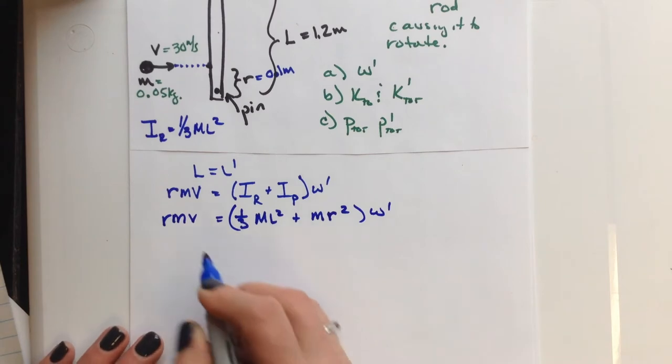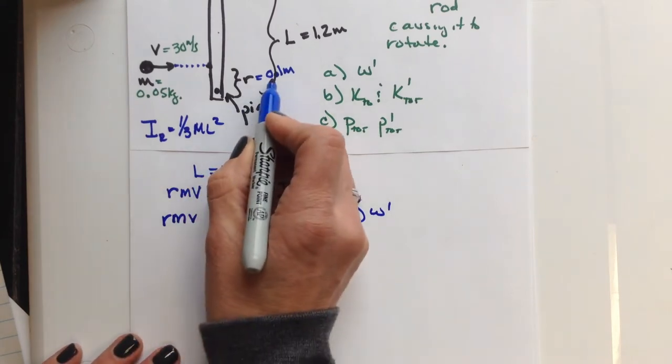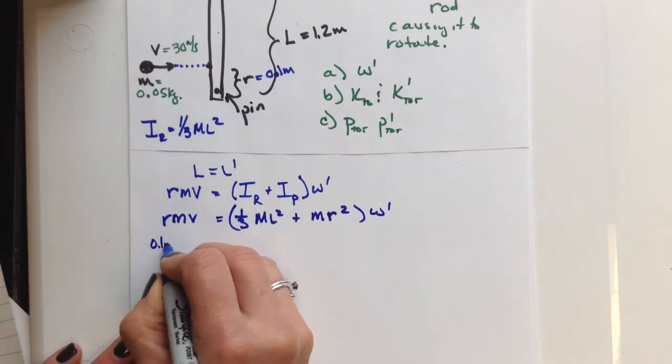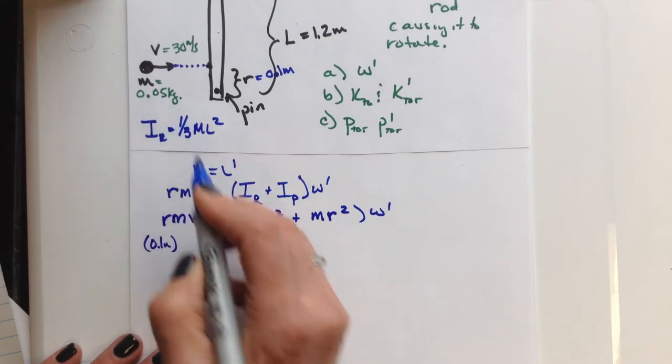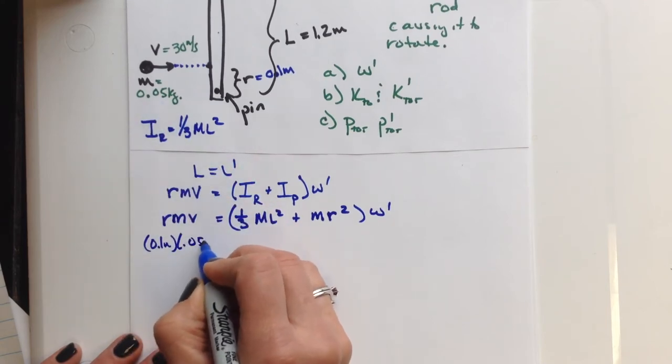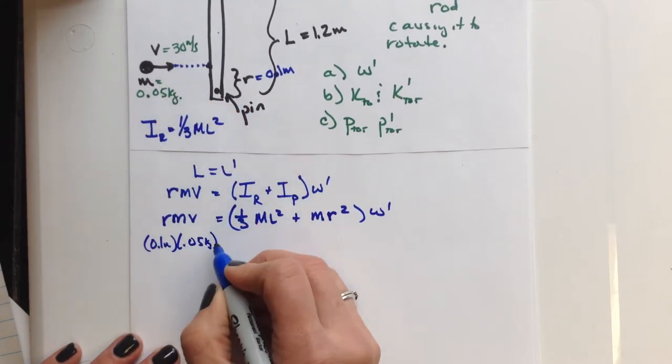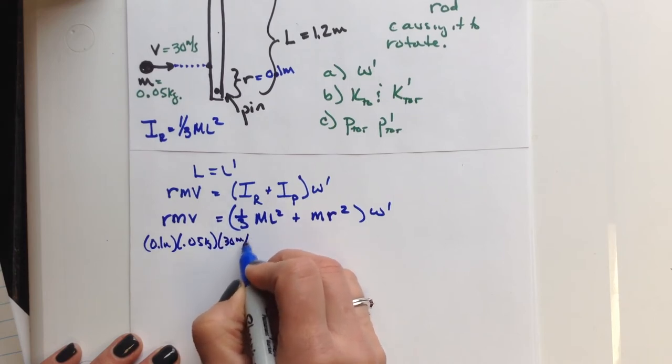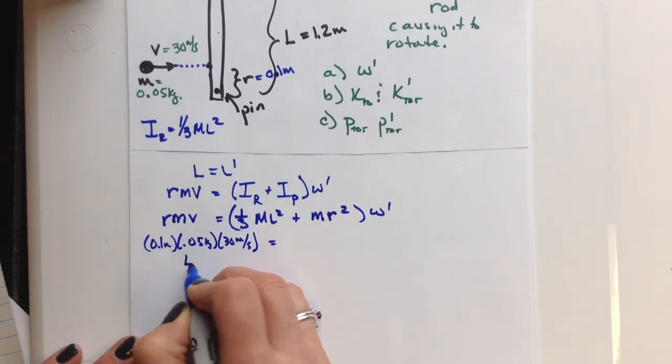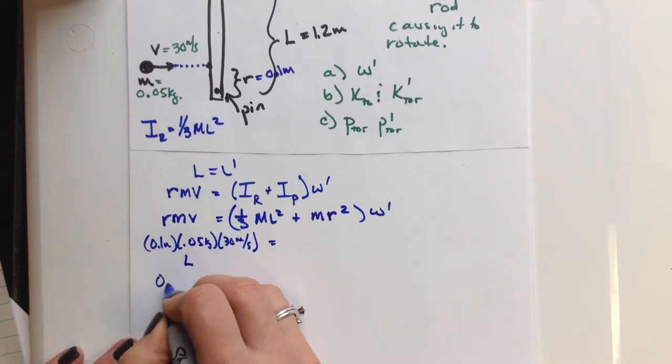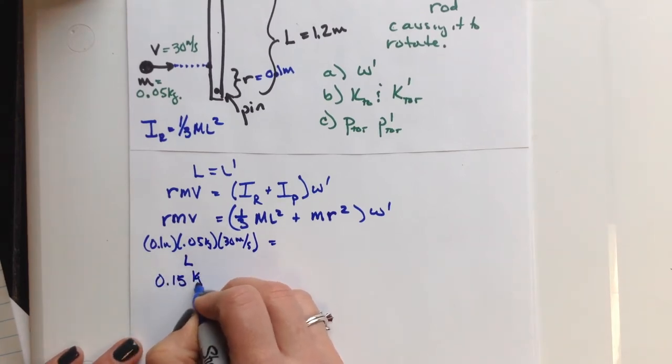And now we can start substituting in some numbers. The radius I mentioned was the 0.1. The mass of the little particle is going to be 0.05 kg, and the initial velocity will be 30 m per second. So if we plug that in, we know that our initial total angular momentum is 0.15 kg m² per second.